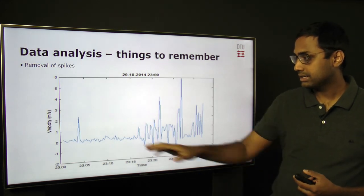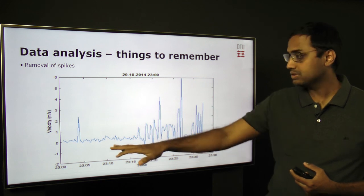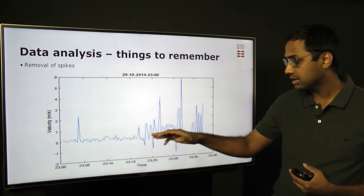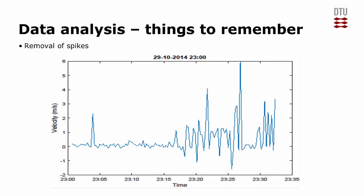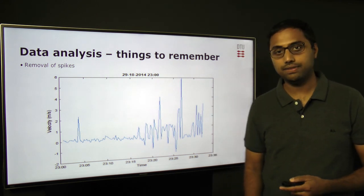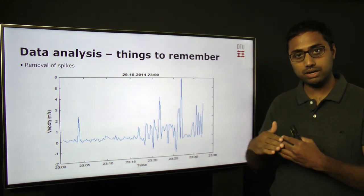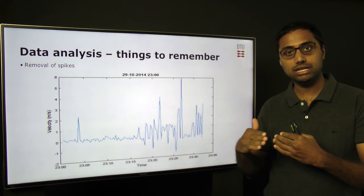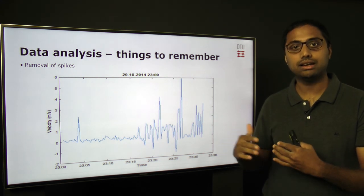Then, removal of spikes. This is a very typical time series where you not only see fluctuations, but huge jumps in the wind velocities on a very short time scale, which normally can be thought about as spikes. And this we need to remove, otherwise we artificially increase the amount of energy at higher frequencies.